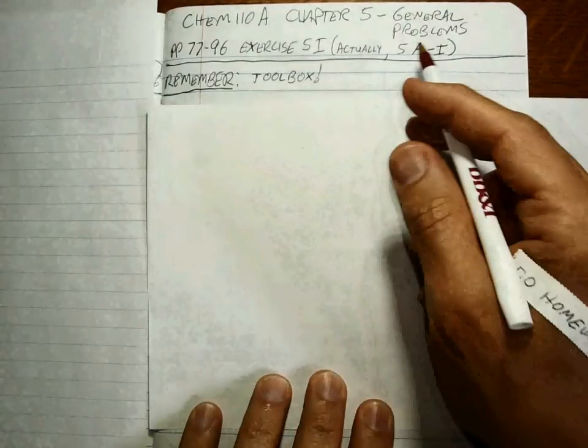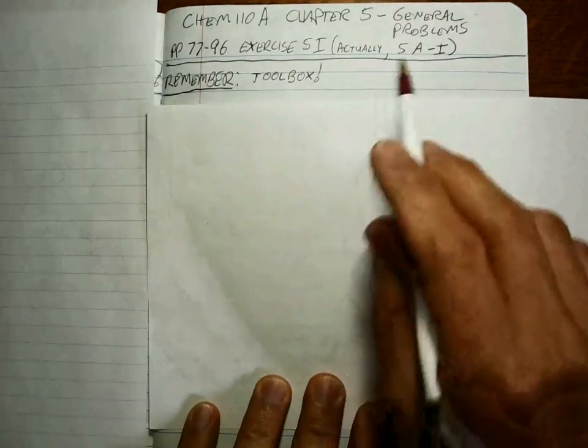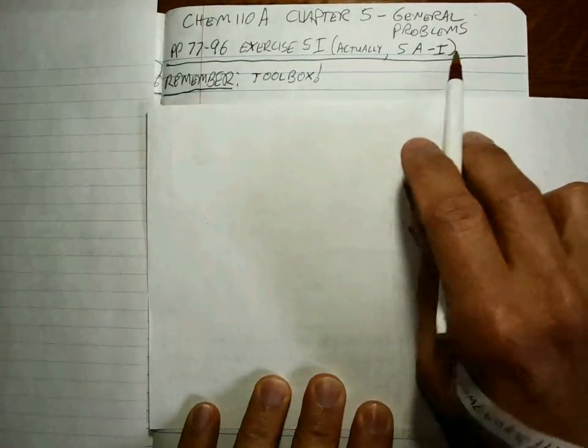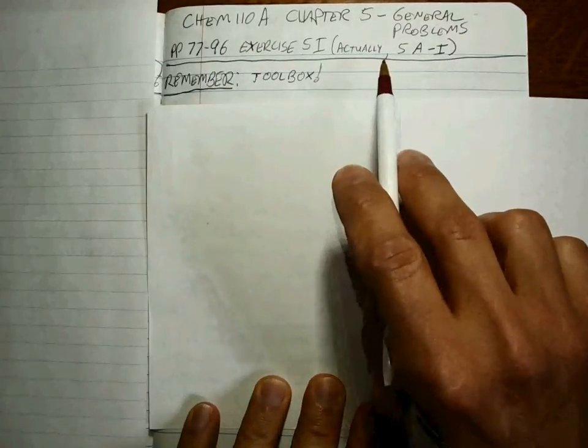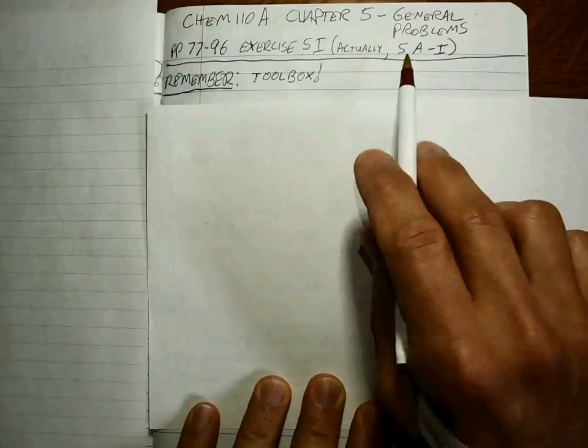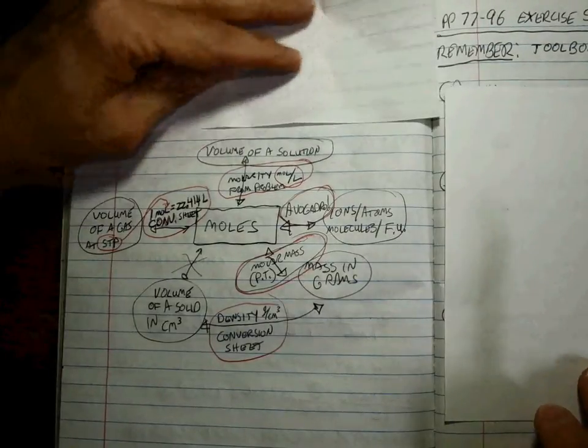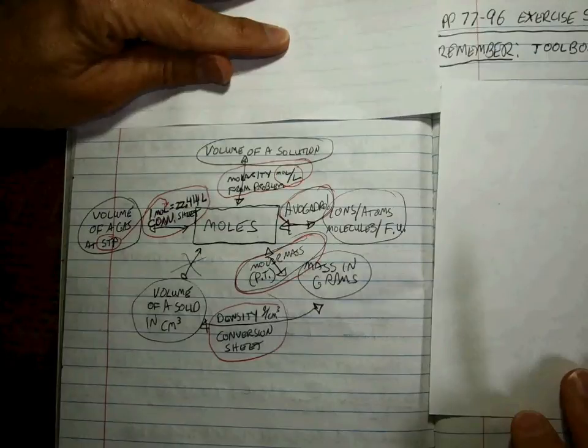Okay, chapter five. These are general problems where we're going to take everything from the entire chapter and put it all together. The thing you have to remember is your toolbox, so let's take a look at that toolbox we learned from the entire chapter.